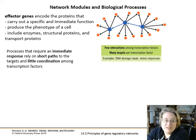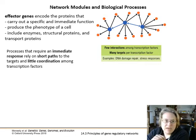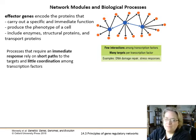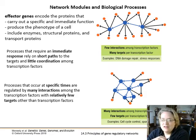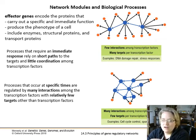Effector genes are the proteins that actually do things — enzymes, structural proteins, transport proteins — and represent the phenotype of the cell. Processes requiring an immediate response have short pathways to their targets with little coordination among transcription factors, like stress response or DNA damage. Something that occurs at specific times, like cell cycle control or sporulation, needs a lot more controlled regulation with many interactions among transcription factors but relatively few targets, resulting in a much broader network.